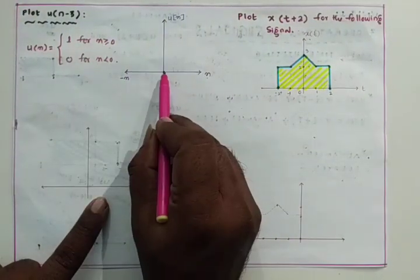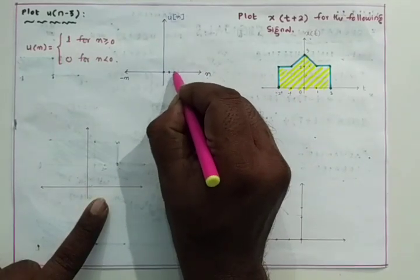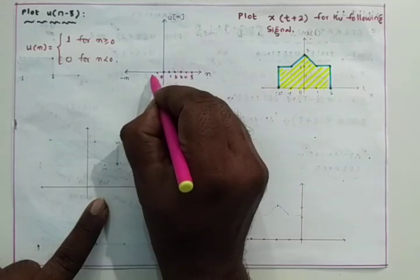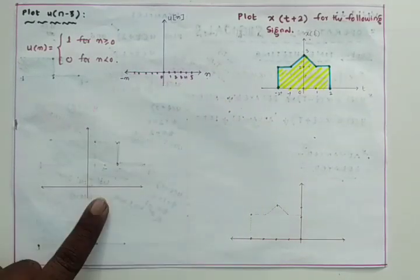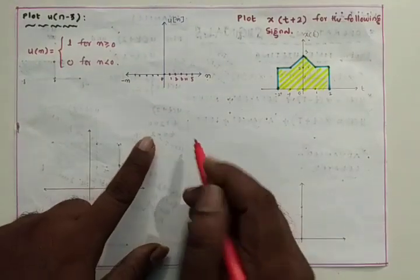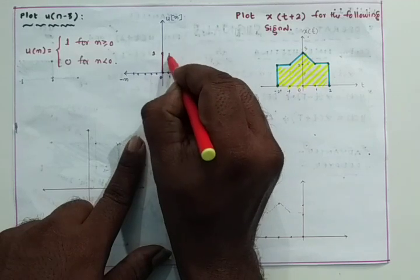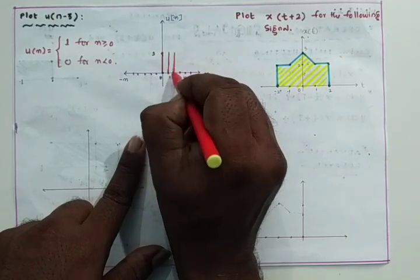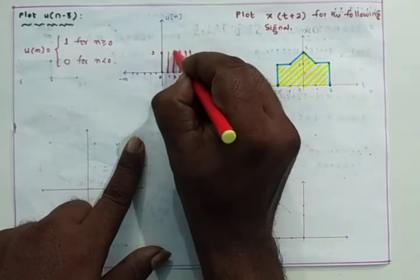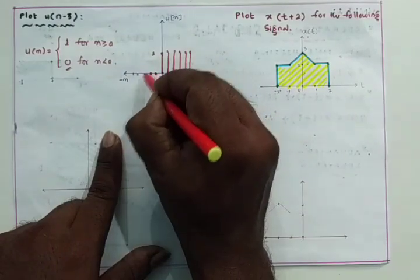For n ≥ 0, the amplitude is 1 but n is discrete in nature — it is an integer — so only at n = 0, 1, 2, 3, 4, 5... the amplitude is 1. For negative values, n < 0, the amplitude is zero. This is the discrete time unit step signal.